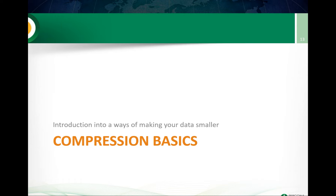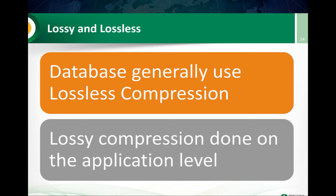Now let's look at compression basics. What ways exist to make your data smaller? There are really two big classes of compression algorithms. One is lossy — for example, JPEG compression, which does not exactly represent the original picture but looks the same. The other is lossless, where when you uncompress the data, it is exactly the same as the original. When it comes to databases, they generally use lossless compression because one of the key properties you want from a database is that if you put data in and then read it back, you get exactly the same data back. Lossy compression can sometimes be done at the application level.